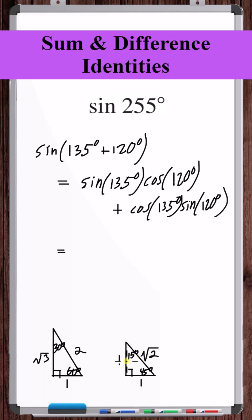So sine of 135 is positive 1 over root 2. Cosine of 120 is negative 1 over 2. Cosine of 135 is negative 1 over root 2. Sine of 120 is positive root 3 over 2.